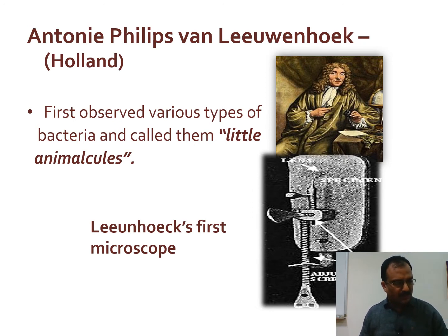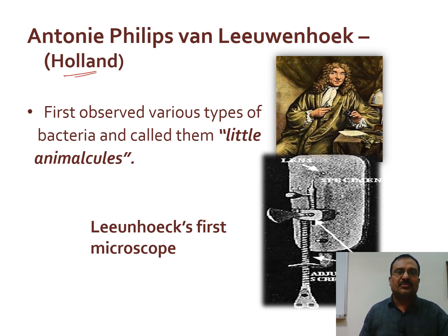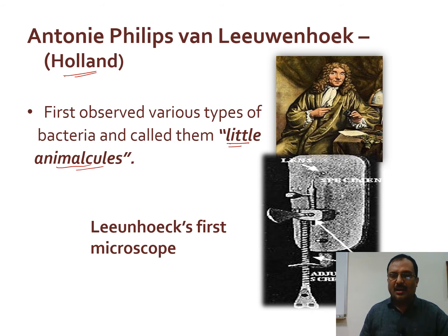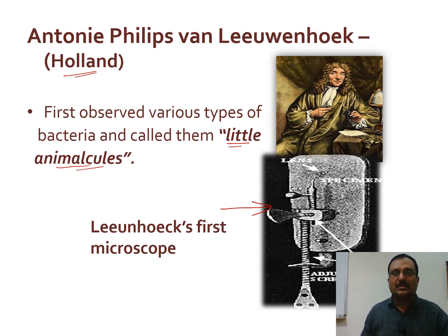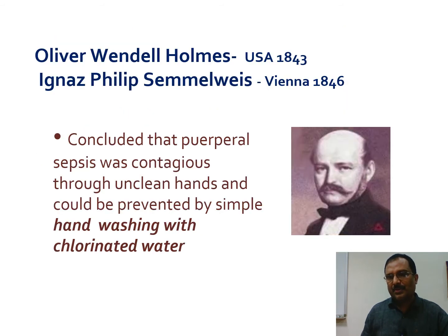The first pioneer to discuss is Antonie van Leeuwenhoek from Holland. He was a draper by profession, and while working with glass, he observed various types of bacteria and called them 'little animalcules.' He prepared his own microscope using a single lens and observed many bacteria. This was the first microscope designed by van Leeuwenhoek.